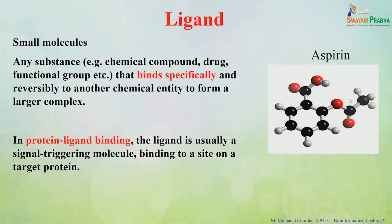When we go to protein-ligand interactions, what do we mean by a ligand? Generally, ligands are small molecules — any substance or chemical compound. It can be a drug or any functional group that binds specifically to another entity to make a complex. For example, a small molecule can interact with a protein to form a protein-ligand complex, or a drug molecule can interact with DNA as in DNA-drug interactions. Here is one example: aspirin, which is a painkiller used to treat headaches and is considered a drug.